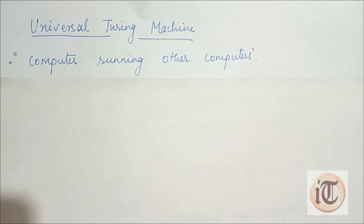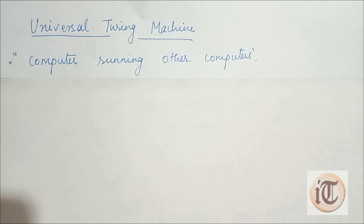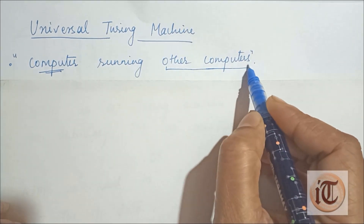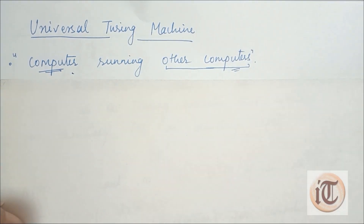In a similar manner, in a Universal Turing Machine we put some input and an algorithm — the description of a Turing Machine — and according to this input and the description of the Turing Machine, it gives some output: either it accepts the language, rejects the language, or it may continue in a loop. The Universal Turing Machine is the computer, and the other Turing Machines put as input are called other computers.